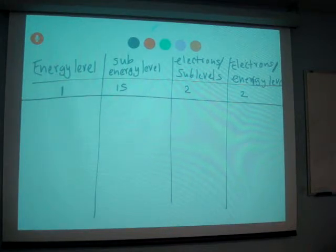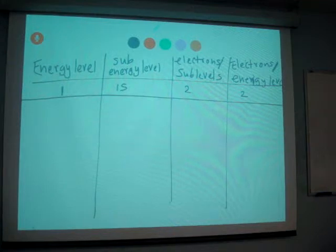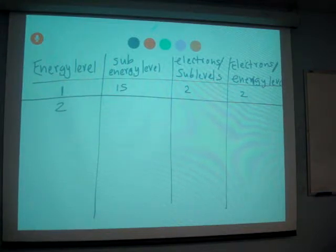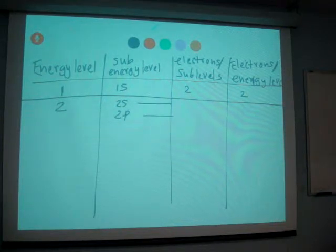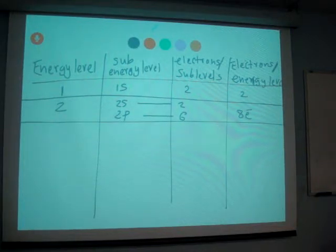Now if energy level 2, then sub levels are 2s and 2p and their capacity for sub level, 2 electrons and 6 electrons, so total 8. So 8 electrons for energy level 2.